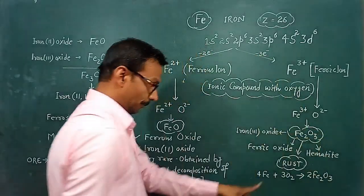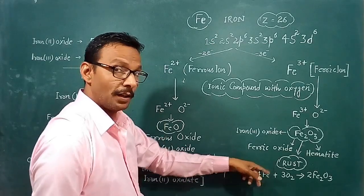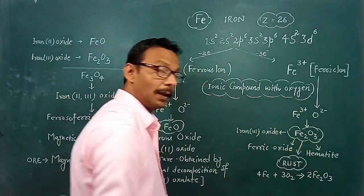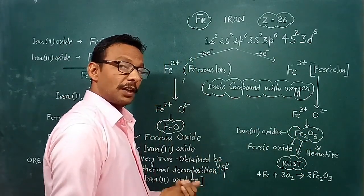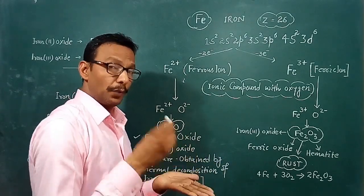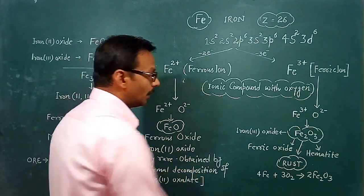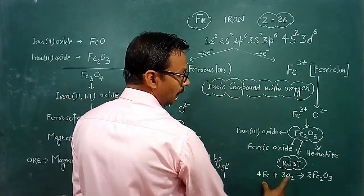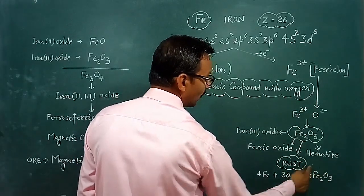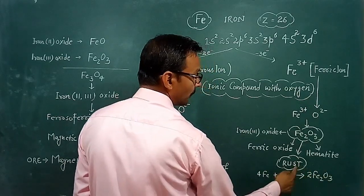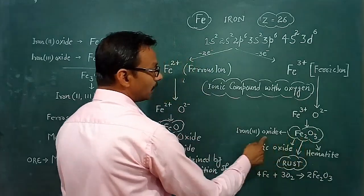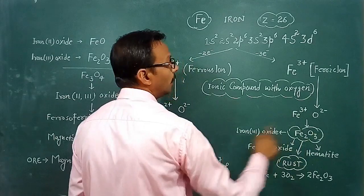Fe2O3 is also formed when iron undergoes rusting. When iron is exposed to air in the presence of moisture, a reaction occurs and the compound formed is rust. This rust is ferric oxide — Fe2O3 — which contains water molecules of crystallization. So Fe2O3 is both hematite and the rust of iron.